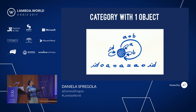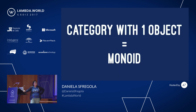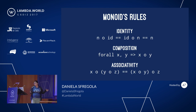What is a category with one object? Same rules as before — you need composition and associativity — but it's even simpler with just one object. Mathematicians like to make everything harder, so they give weird names. In this case the weird name is Monoid. They could have called it 'category with one object' but that was probably too long. The rules are exactly the same: identity, composition, associativity.